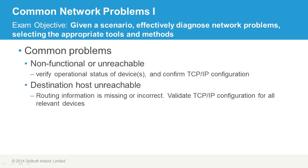If a resource is non-functional or unreachable, you need to verify the operational status of the devices required to reach that system and confirm both its TCP/IP configuration and your own. If a destination host is unreachable, it almost always indicates that routing information is missing or incorrect — a routing issue. You have to validate the TCP/IP configuration for all relevant devices between you and the system you're trying to reach. There are a lot of things that can go wrong from a network perspective, and we'll continue to see a few more in the next presentation.